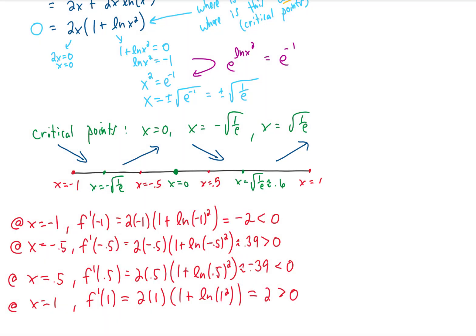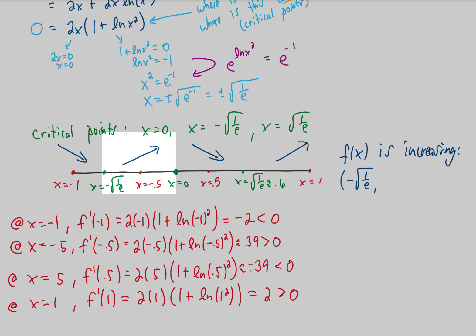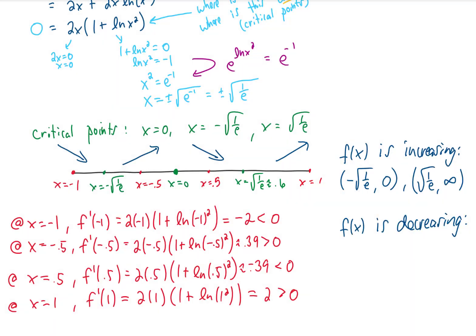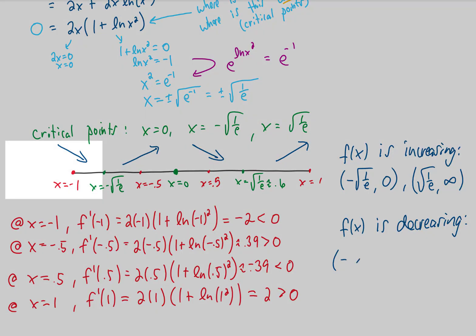So ultimately, what have we learned? Well, we've learned that our function f(x) is increasing on two intervals, one from negative square root of 1 over e to 0, and another from the square root of 1 over e to infinity. We've also learned that our function is decreasing on two intervals, one from negative infinity to the negative square root of 1 over e, and the other interval from 0 to the square root of 1 over e.